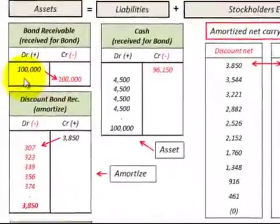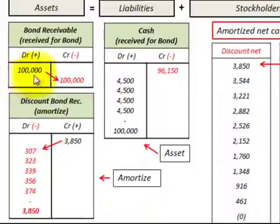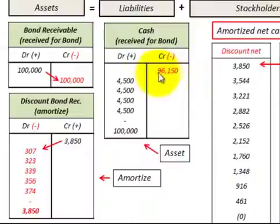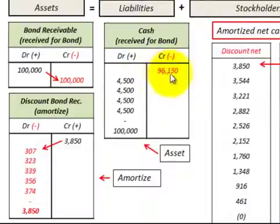For this example, we go out and purchase a $100,000 face value bond with a 9% stated rate of interest, for five years with 10 semi-annual payments. We pay $96,150 cash for that bond, which is based on discounting the $100,000 back using a 10% market rate of interest — that would be its present value.